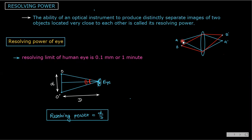Let's see one example. Here are two objects A and B which are located very close to one another, as you can see. This optical instrument produces the images of these two objects distinctly — the image of A is A-dash and image of B is B-dash. This ability is nothing but resolving power.